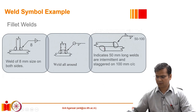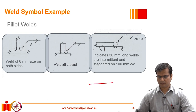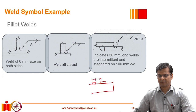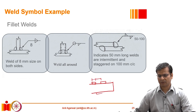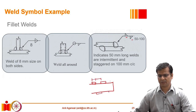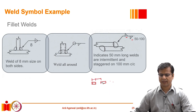There is a weld here, then a gap, then another weld, and so on — the weld length is 50 mm, then a gap of 50 mm, so the center-to-center spacing becomes 100 mm. On the other side of the plate, the welds are staggered, which is why there is a gap between the two fillet symbols shown — these welds are not directly opposite each other.